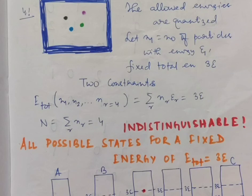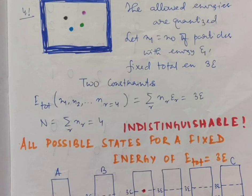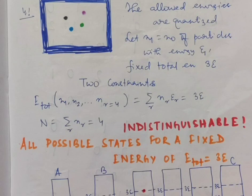The three possible energy distributions are: three particles in the lowest energy level (0 epsilon) and one in the 3 epsilon level; two particles in 0 epsilon, one in 1 epsilon, and one in 2 epsilon; and one particle in 0 epsilon with three in the 1 epsilon level. These are the only three distributions for which the total energy equals 3 epsilon for four particles.